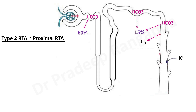Like all RTAs, chloride gets reabsorbed, causing more chloride in the serum. Potassium secretion occurs into the tubules, so there is less potassium in the serum — resulting in hypokalemia, as seen in type 1 as well. About 25% of bicarbonate still gets excreted, but not as much as in type 1, which is why urine pH here is less than 5.5.